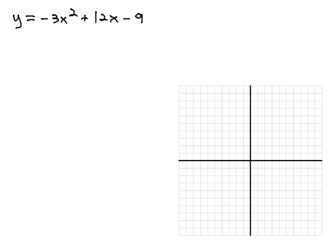In this video, we're going to attempt to graph or draw a picture of solutions to the equation y equals negative 3x squared plus 12x minus 9. We're going to do this by identifying key points on the graph that can help us determine the graph's shape.